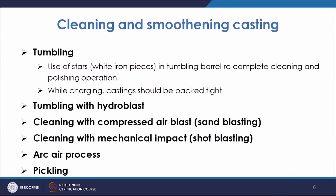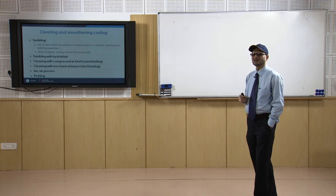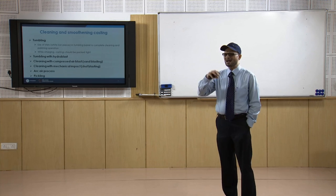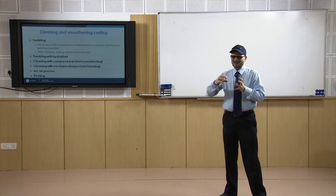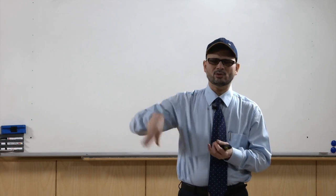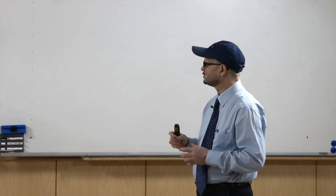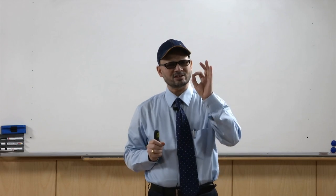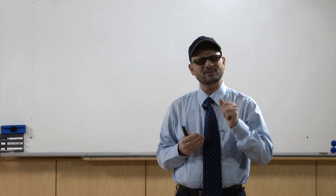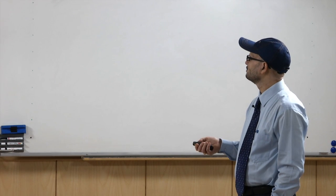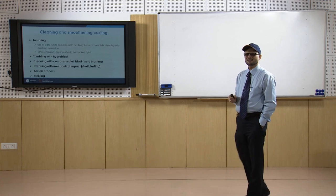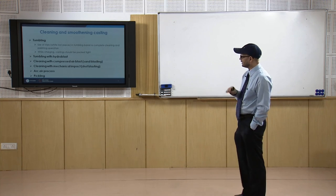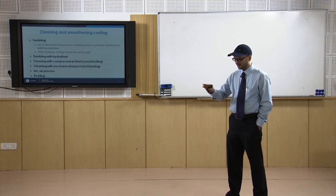Cleaning with mechanical impact is known as shot blasting, where iron shots are used to clean the surface. The equipment uses centrifugal force with impellers; iron shots are fed and rotated, exiting at very high speed to strike the casting surface and remove undue projections and fins. You also use the arc-air process, where an arc is created and air is blown over it so that the surface is cleaned under the air blast.